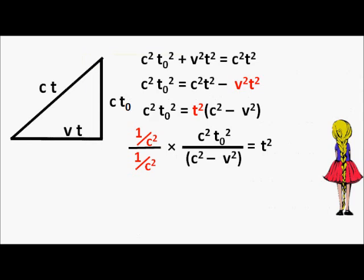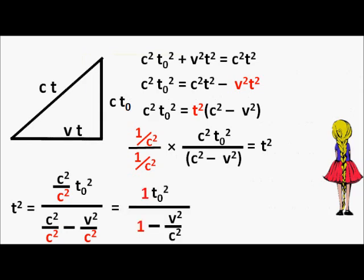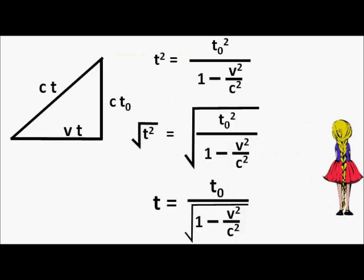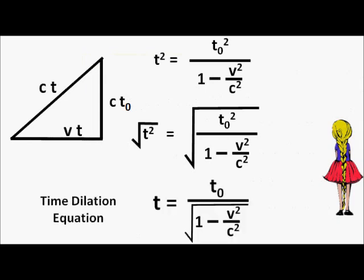That won't change the value of anything, but it changes the way I express things. I see c squared over c squared appearing, and wherever I see c squared over c squared I replace it with one. Now the expression looks like this. I'll square root both sides and obtain the positive square root of the right-hand side. What I have is the time dilation equation — I've derived it. Let's see whether I can apply it.